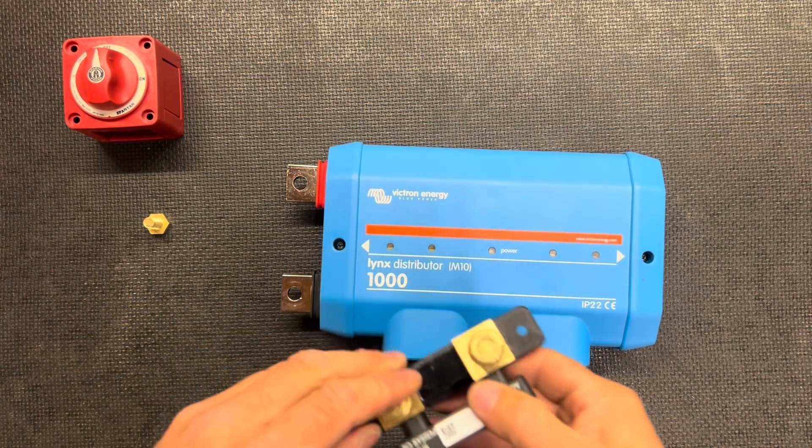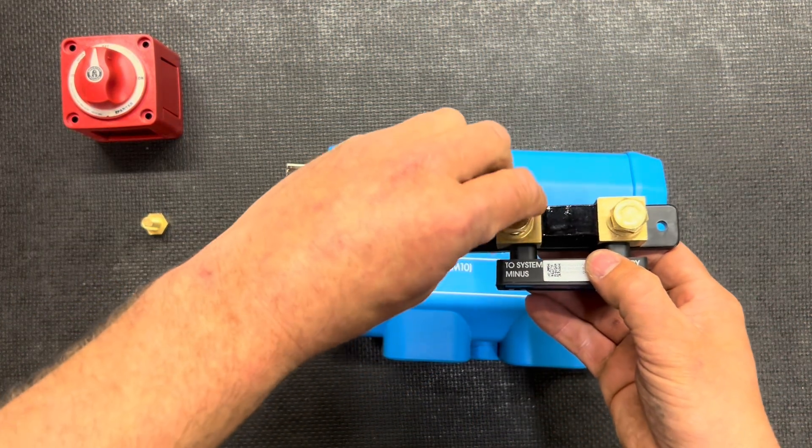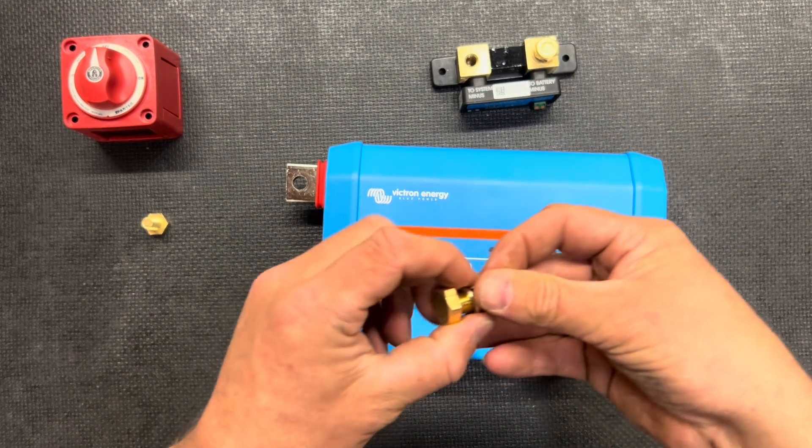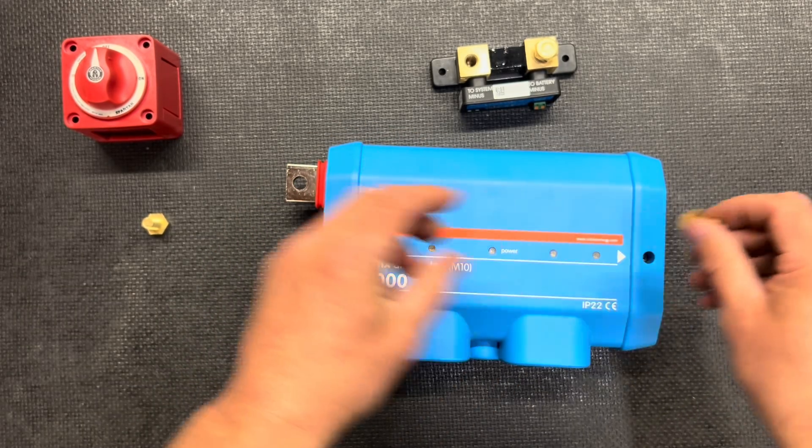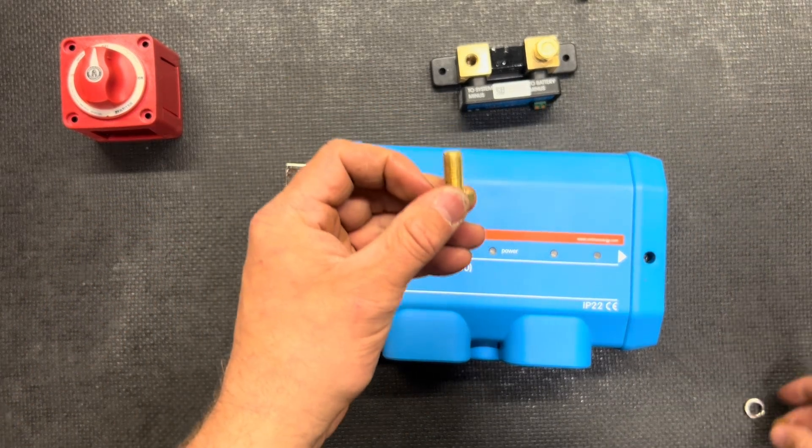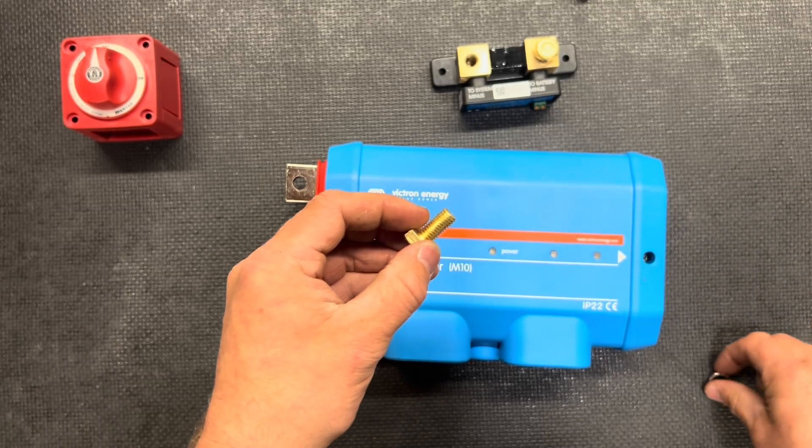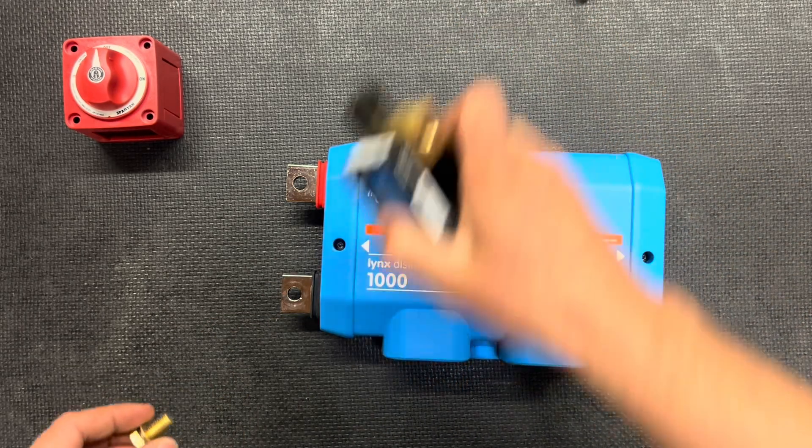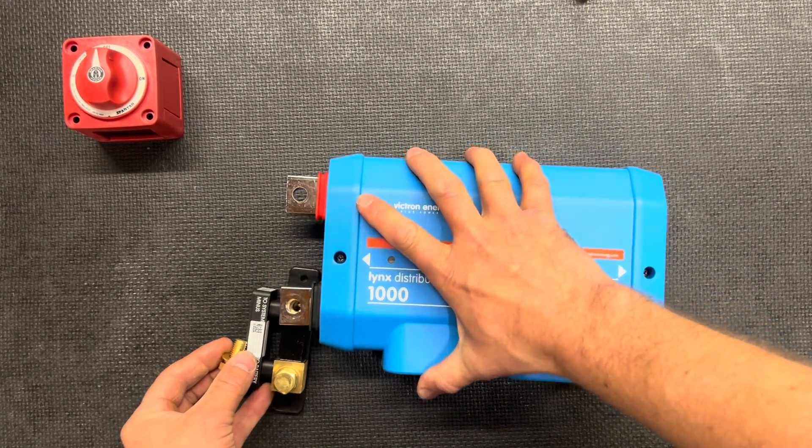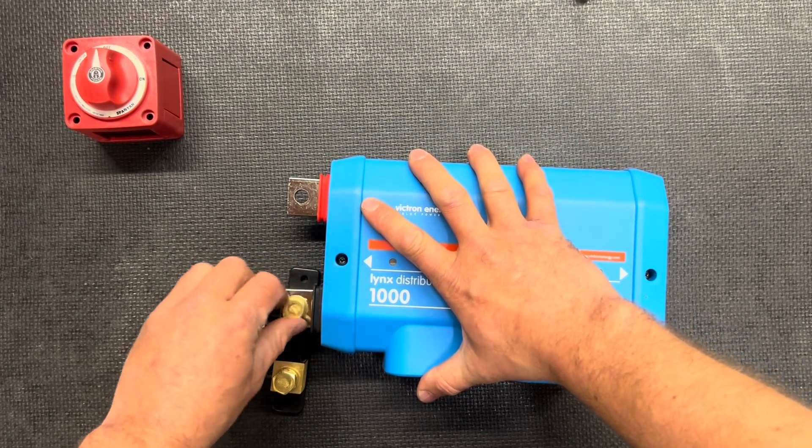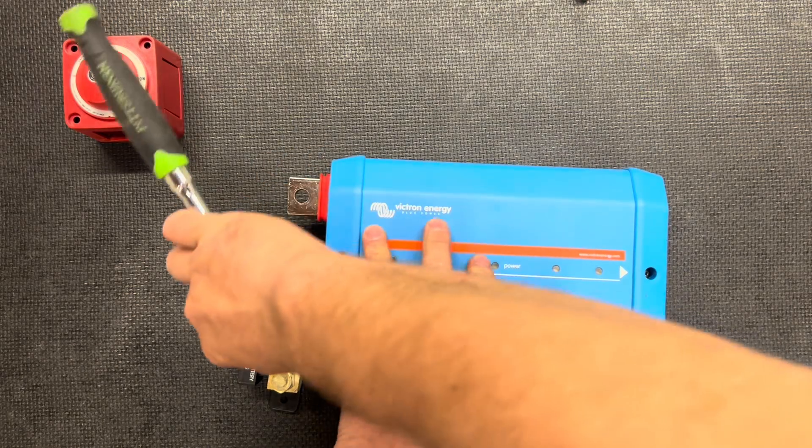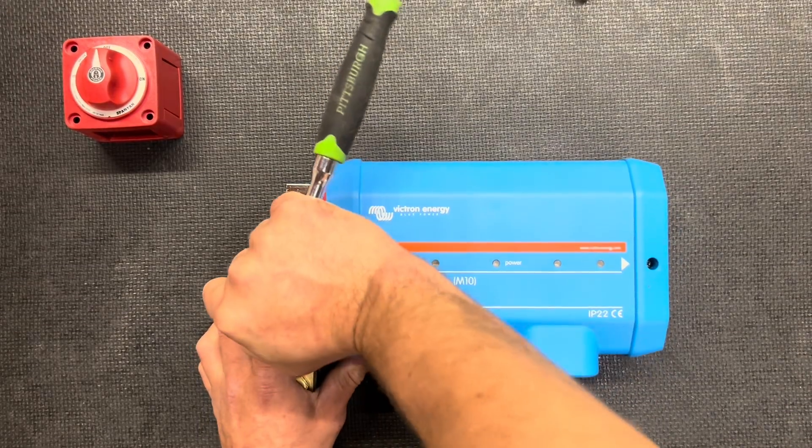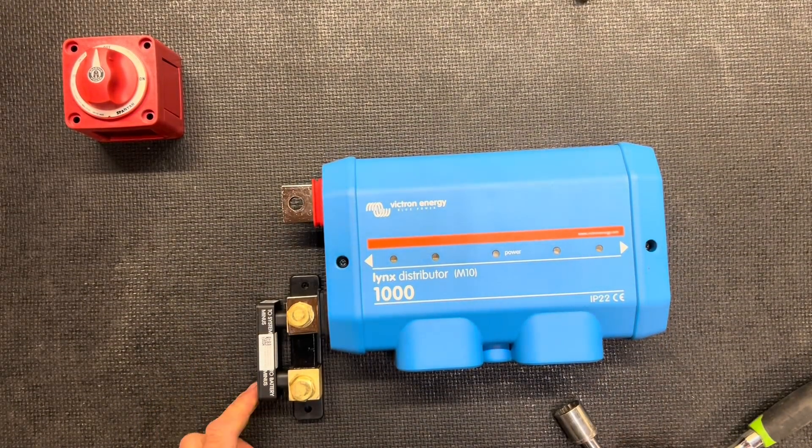Because we're using the M10 distributor, this is going to make this job really simple. We're going to remove the bolt from the shunt here and replace the M10x15 with the M10x20, lock washer followed up by the washer. We'll take this, put it into the lynx distributor. We'll snug that up using the 17 millimeter, and it's nice to put it down like this because it gives you easy access to all your ports over here.